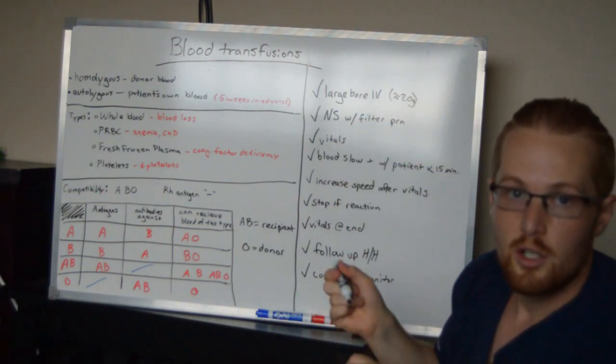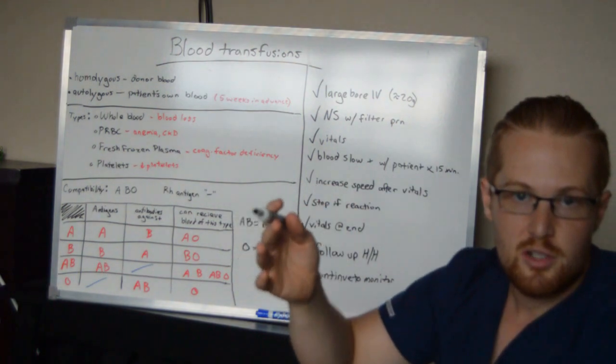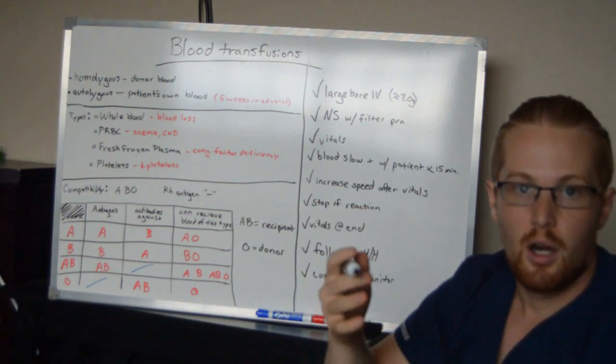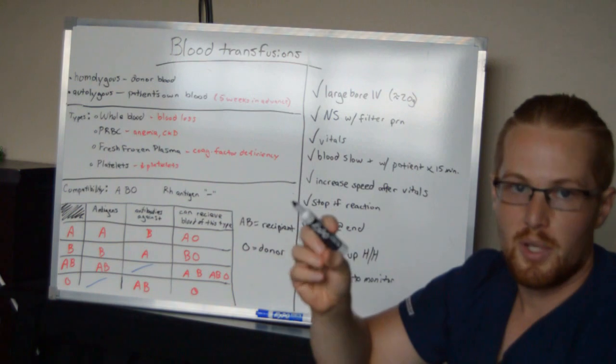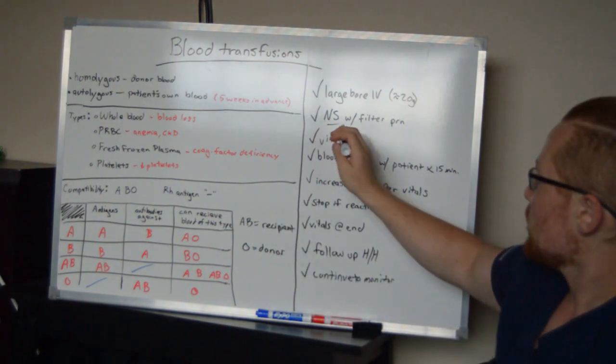You want to run with only normal saline. Normal saline is called normal saline because it matches the amount of fluids in your blood, and so it keeps it from the cells getting too small or too big and exploding. So only normal saline.